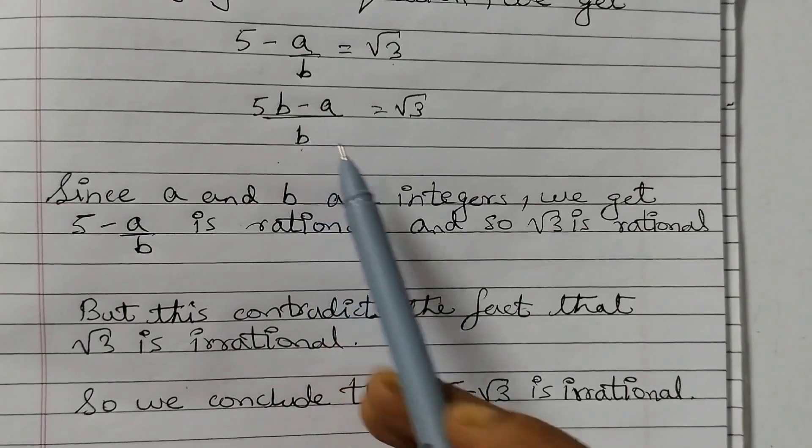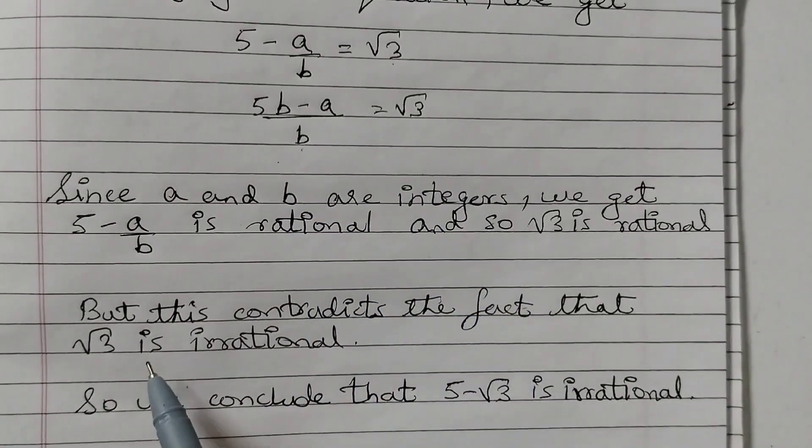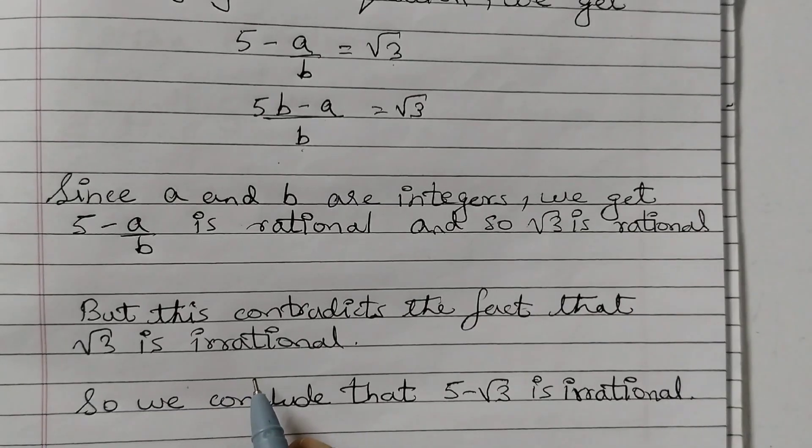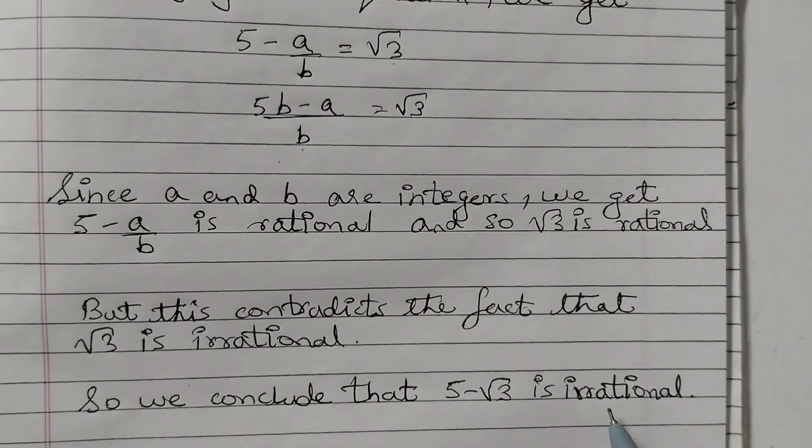If this whole thing is rational, that means this is also rational. But this contradicts the fact that square root of 3 is irrational, which is given to us. So we conclude that 5 minus square root of 3 is irrational.